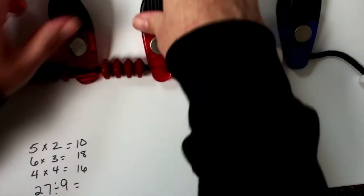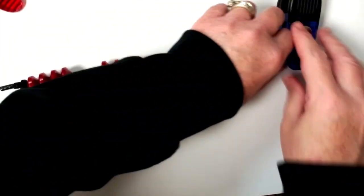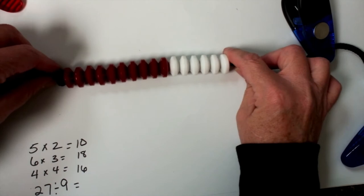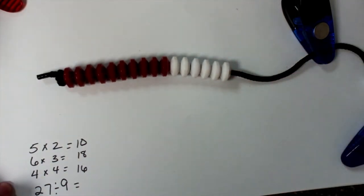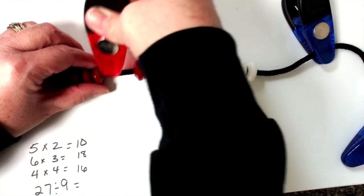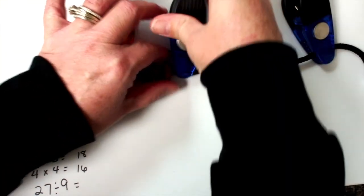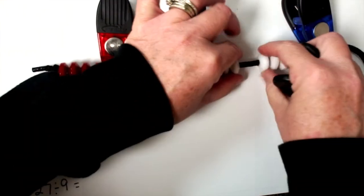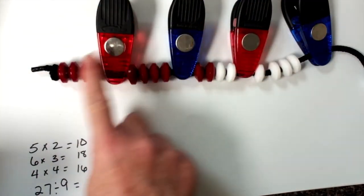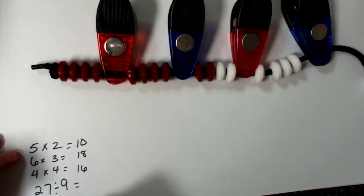Now I've got some division problems. We're going to first do sixteen since I've already got it here. Sixteen divided by four — I need to divide that into four groups. Again, I'm bringing four, four, four, and four. How many groups do I have? One, two, three, four. My answer is four.